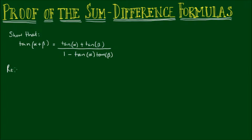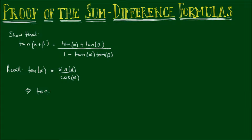You may recall that tan of an angle alpha is equal to the sine of alpha divided by the cos of alpha. This then implies that if I have the addition of another angle, so tan of alpha plus beta, this would be equal to the sine of alpha plus beta divided by the cos of alpha plus beta.